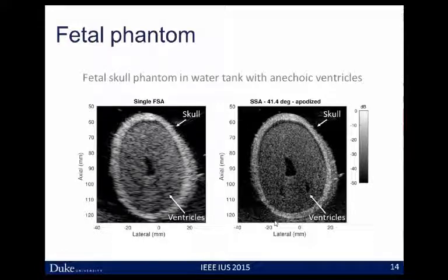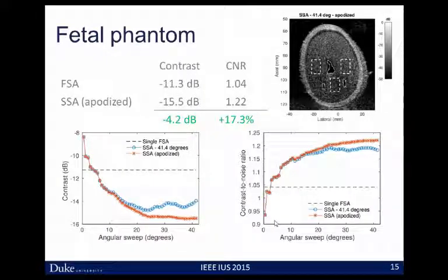We can do this with extended targets. Here we see a fetal phantom. On the left is our full synthetic aperture image; on the right, the 41.4-degree swept synthetic aperture image. We notice much better definition of the skull around the outside, a much tighter speckle pattern throughout, better edge resolution on the large interior anechoic ventricle, and we can also see two small ventricle structures that previously were on the order of the resolution cell size. We can actually see new high-resolution targets due to our sweep. We quantify improvements in those anechoic regions, seeing an improvement in contrast of 4.2 dB and an improvement in contrast-to-noise ratio of 17.3%, in addition to the qualitative resolution improvement.